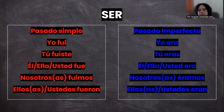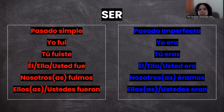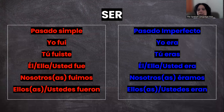Pasado imperfecto: yo era, tú eras, él/ella/usted era, nosotros/nosotras éramos, ellos/ellas/ustedes eran.